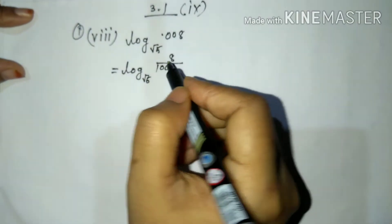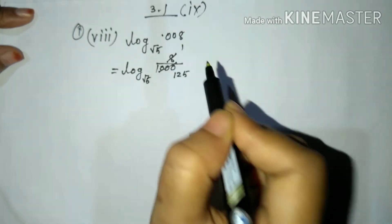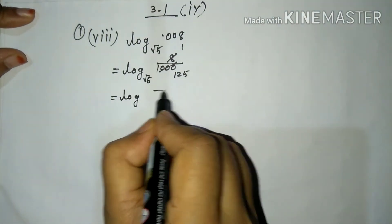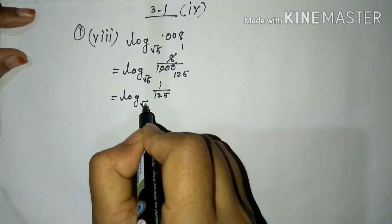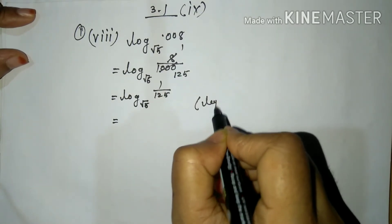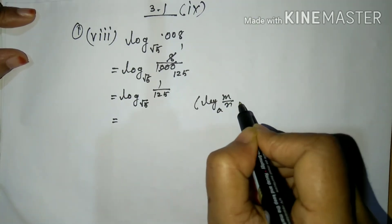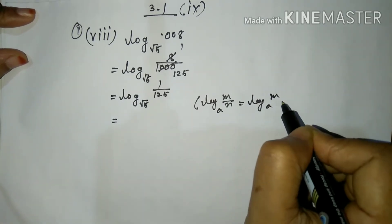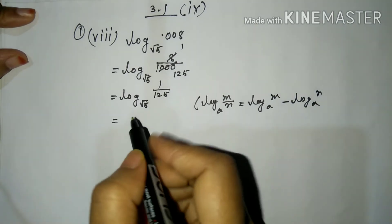Now, log .008 to the base root 5 can be rewritten. The value of log .008 to the base root 5 is evaluated step by step.